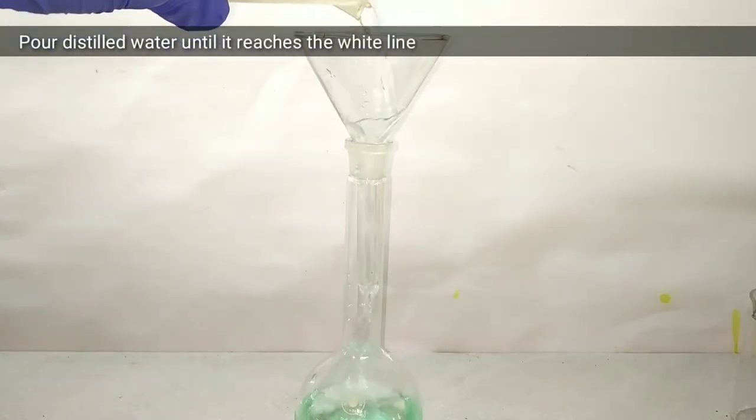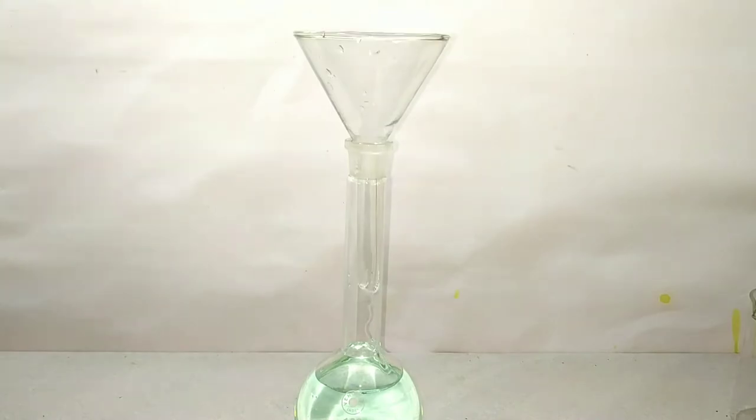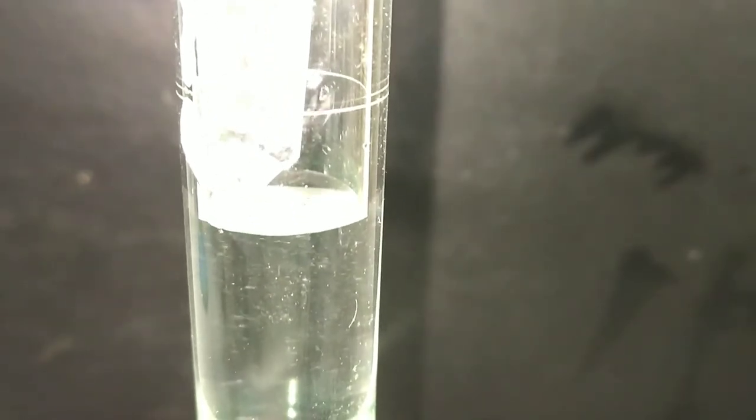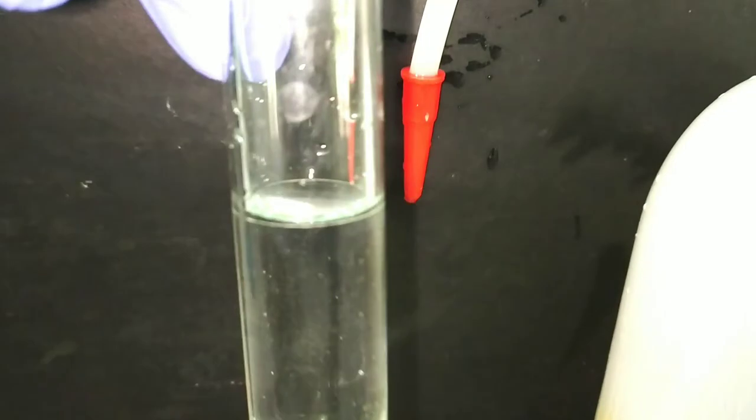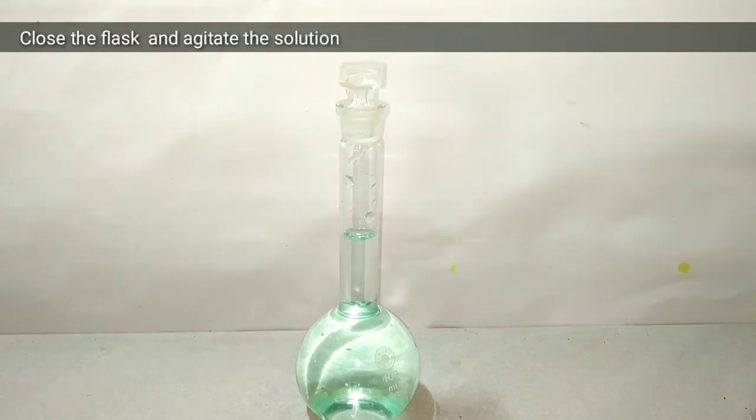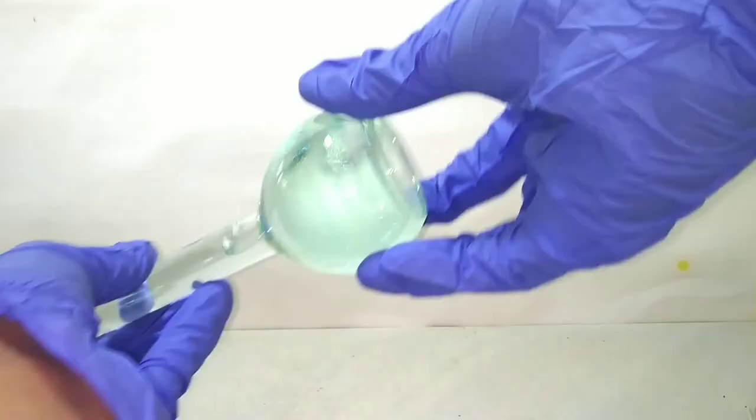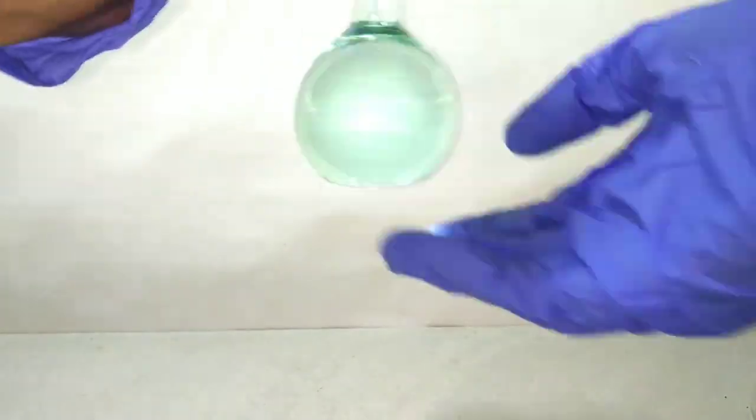Now we pour the distilled water into the volumetric flask until the water reaches the white line marked. When we reach the final part, we should be very careful and add dropwise the solution until it reaches the mark. We should read that by placing it at eye level to avoid the error of parallax. Now we cap the volumetric flask and agitate it to mix the solution well.